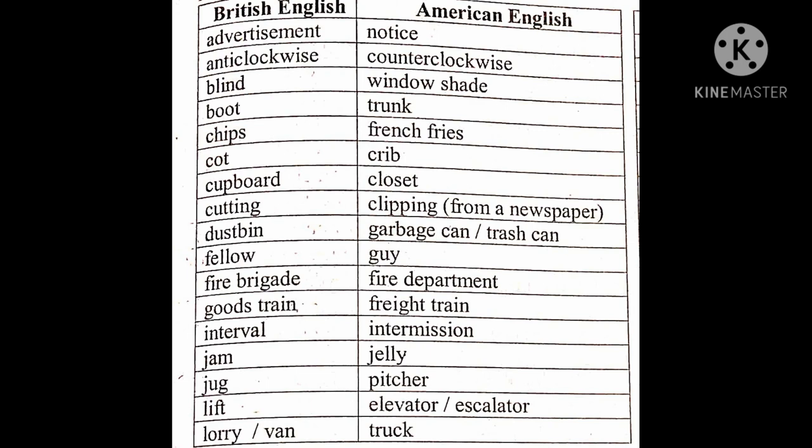We accept both American and British, so we have the opportunity to know more words. Anti-clockwise versus counter-clockwise: clockwise means from left to right, and right to left is anti-clockwise. The Americans say counter-clockwise. Blind — window shade. Boot — trunk. Chips — french fries. They say chips, Americans say french fries.